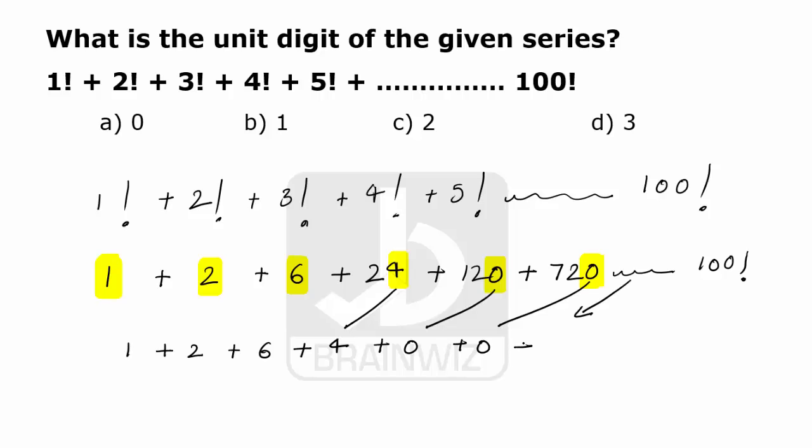We know that the remaining factorials would also result in 0, 0, 0, and so on. So we need to find out the sum of these digits. 1 plus 2 is 3, plus 6 is 9, plus 4 is 13.